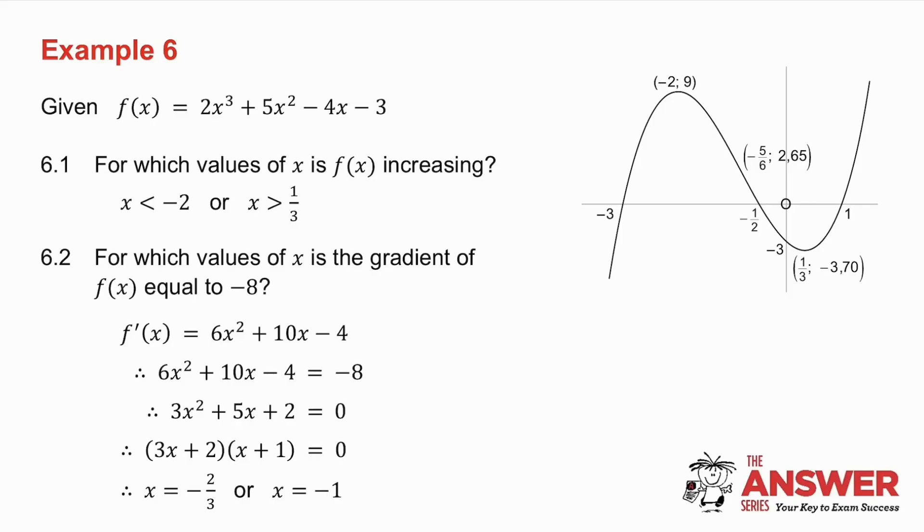In 6.2, for which values of x is the gradient of f(x) equal to minus 8, gradient means derivative. So find the derivative. I've told you that it's equal to minus 8, so make it equal to minus 8, solve the trinomial, and you get those two values. And the two values, one of them would be over there, and the other one would be somewhere there. So there are the two x values they wanted.